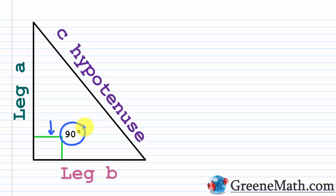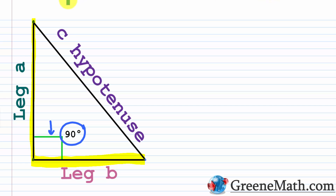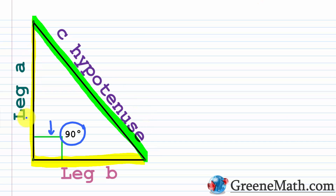A right triangle consists of two legs. We have leg A going from one vertex to the corner, and leg B going along the other shorter side. Then we have the hypotenuse — the side that's opposite of the 90-degree angle, which is always the longest side. So the two shorter sides are known as legs, and the longest side is the hypotenuse.